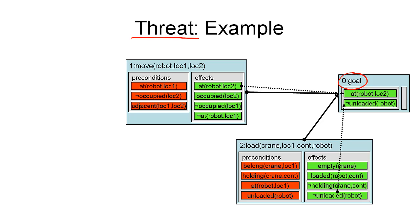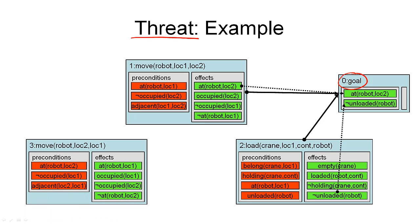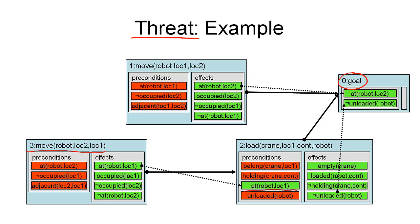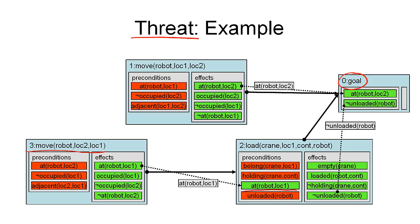Now, what we do is apply more plan refinement operations. In this case, we add an action to the plan — this new move action over here. And the reason why we do this is because we want to support the precondition 'at robot location one' with this new operator. So we have inserted a causal link for this, and we also insert an ordering constraint because the action that is the provider must come before the consumer. Let us also have a look at the conditions that are protected by the causal links: 'at robot location two' here, then 'not unloaded robot' here — the two goal conditions that we want to support. And over here, it is the precondition of the load operator that the robot must be at location one that we're protecting with this causal link.